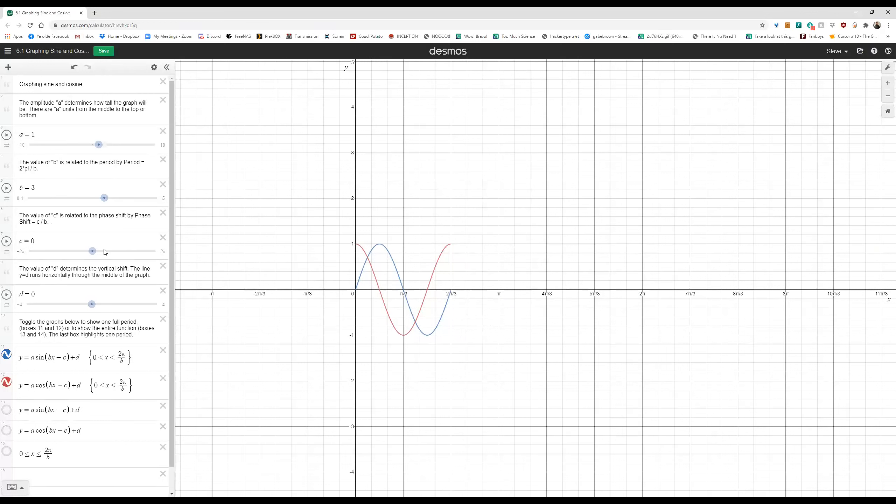So if I just take b to be equal to 3, for example, I have changed my graphs from having a period of 2π to having a period of only 2π over 3. The entire single cycle of a sine or cosine graph fits between 0 and 2π over 3.